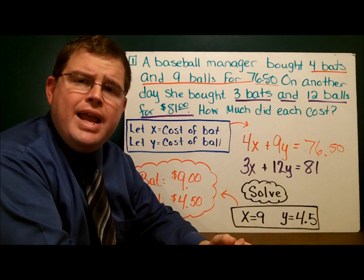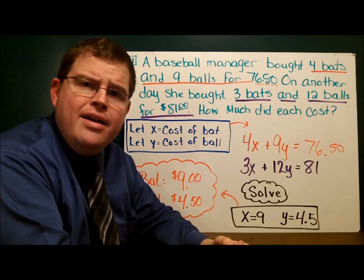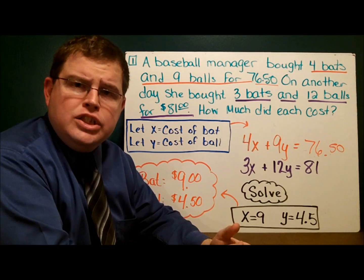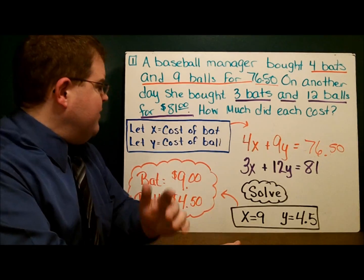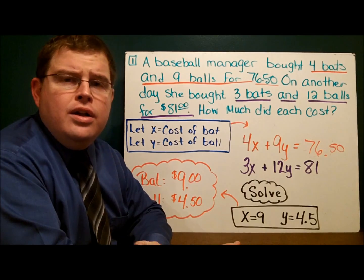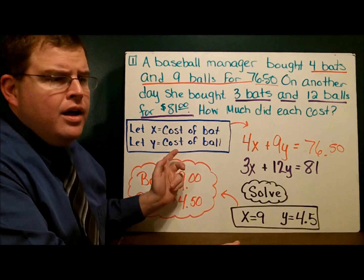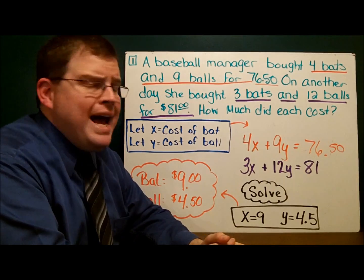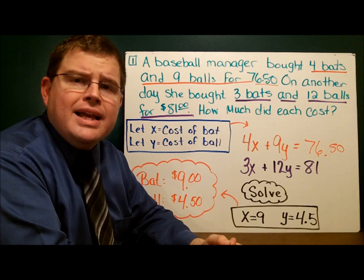The first thing we have to do is look at what we're trying to find — the cost of a ball and the cost of a bat — and then write a let statement to represent that. Let x represent the cost of a bat. Let y represent the cost of a ball. Notice how specific those let statements are: cost of a bat, cost of a ball. It does not simply say let x equal bats or let y equal balls — it's more specific than that, and yours should be like that as well.